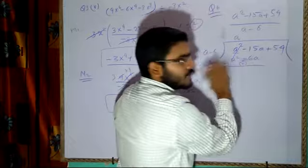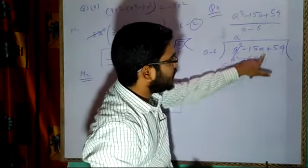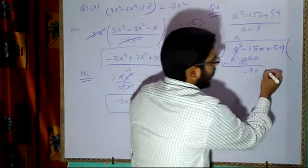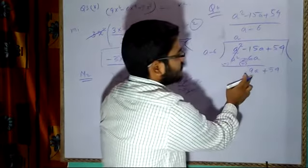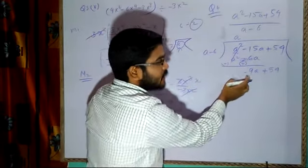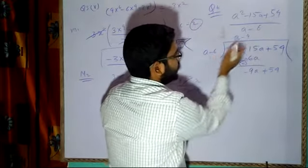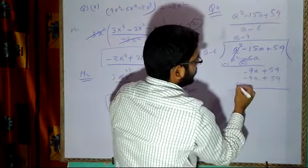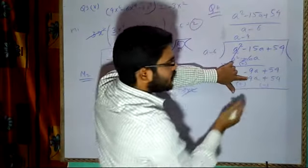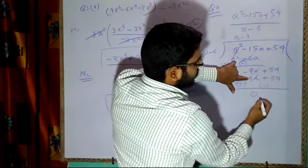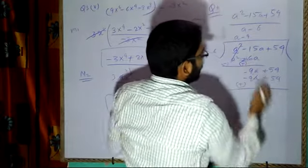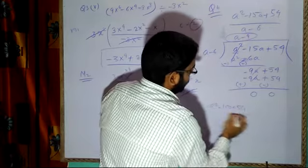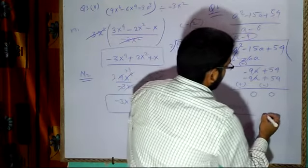Now, a should be multiplied with what to get minus 9a? Multiply by minus 9: a into minus 9 gives minus 9a, and minus 6 into minus 9 gives plus 54. Change signs for subtraction: minus 9a and minus 9a cancel to 0, and plus 54 and minus 54 cancel to 0. So the quotient is a minus 9.